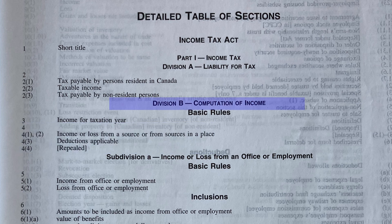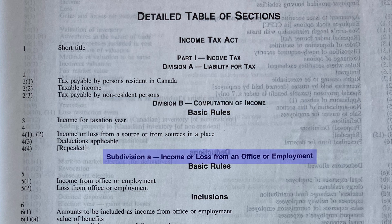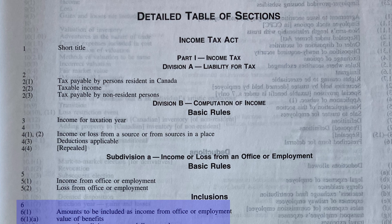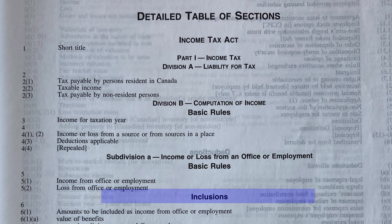Division B is broken down further into different subdivisions. Looking at Subdivision A, Income or Loss from an Office or Employment — what do you think the sections in Subdivision A talk about? That's not a trick question. If you answered Income or Loss from Office or Employment, you would be correct. An inclusion in income tax refers to an amount that is being added to the computation of income calculation — a positive number, if you want to think of it that way.